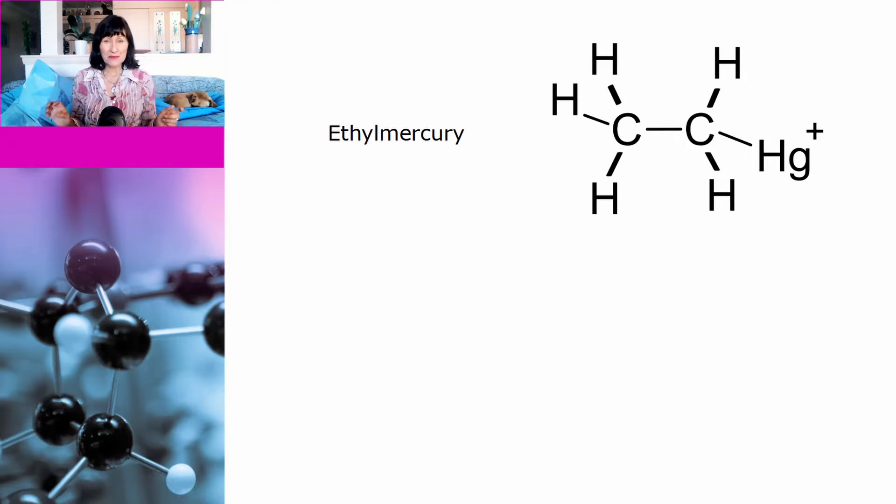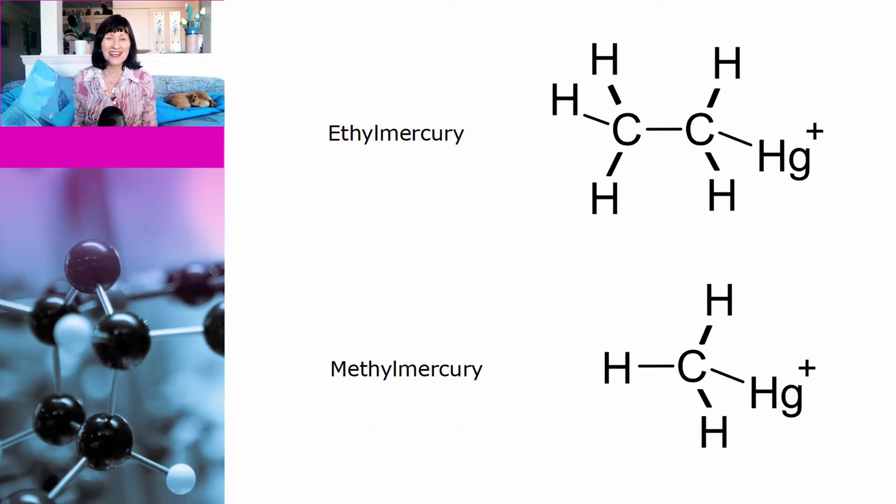The compound that contains mercury that is present in seafood is methylmercury, which you can see below. They are different compounds and they have different toxicity.